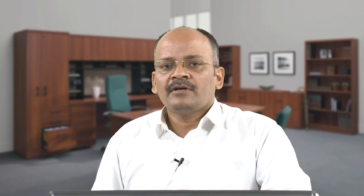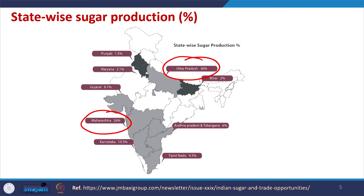Looking at state-wise sugar production, we can see clearly that Uttar Pradesh produces the largest amount of sugar, followed by Maharashtra. There are many other states which also produce sugar as shown.